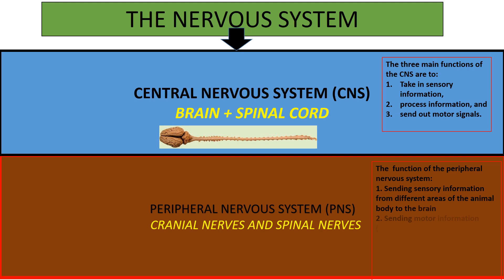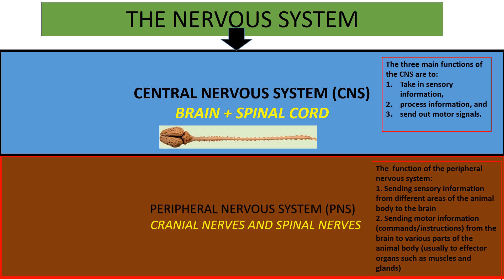On the other hand, the peripheral nervous system is made up of all the nerves outside of the central nervous system. The nerves considered mainly under the peripheral nervous system are the cranial nerves, which are 12 in number, and also the spinal nerves, which can be variable — for example, in animals like the dog, there are normally 36 spinal nerves.